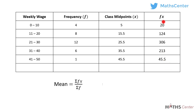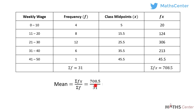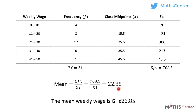We can now find sigma fx by adding all the fx values. When we add all of them we get 708.5. We also need sigma f, so we add all the f values and that gives us 31. So the mean is equal to 708.5 divided by 31, which gives us 22.85. The question said to correct to two decimal places, so the mean weekly wage is 22.85.